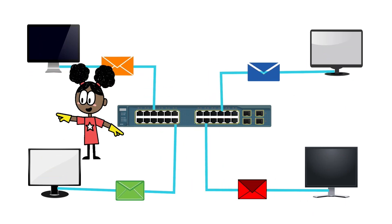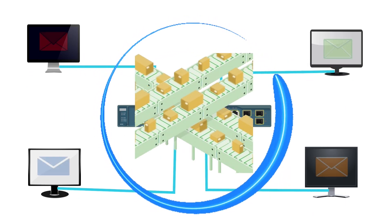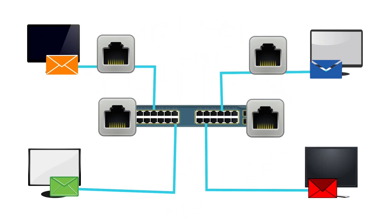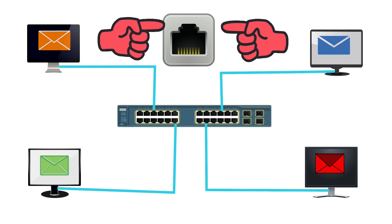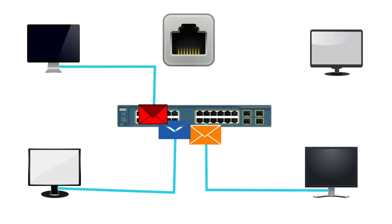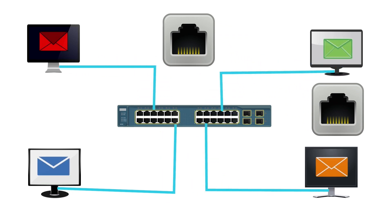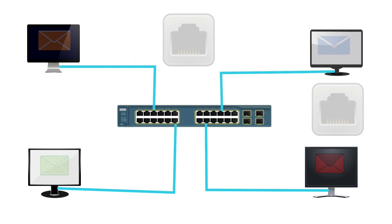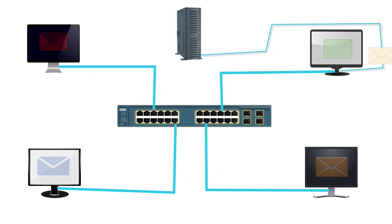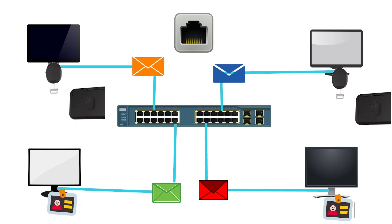A networking device is different from an end device. It does not generate any user data — it only filters and forwards user data. An end device uses a LAN card to connect to the network, and each end device must have at least one LAN card. Without a LAN card, it cannot connect to the network. A device can have multiple LAN cards, and each LAN card allows it to connect to an additional network. For example, if an end device has two LAN cards, it can connect to two separate networks simultaneously.